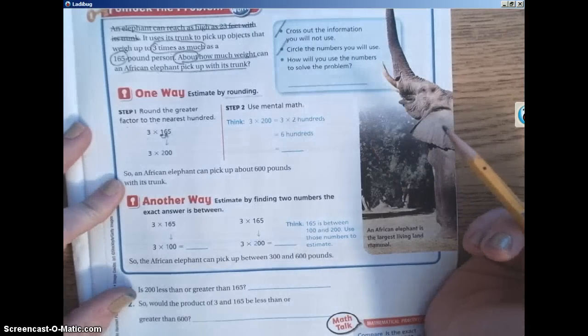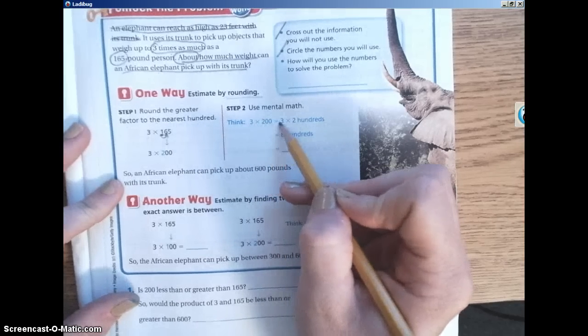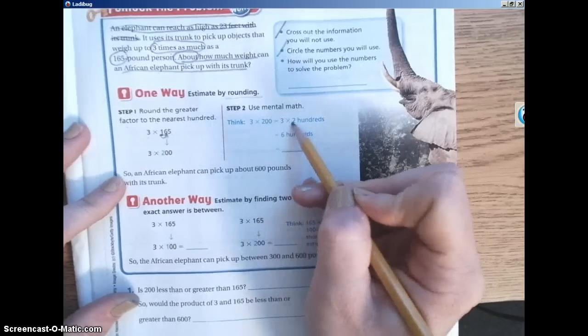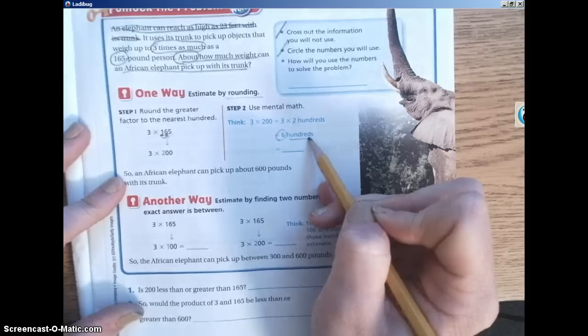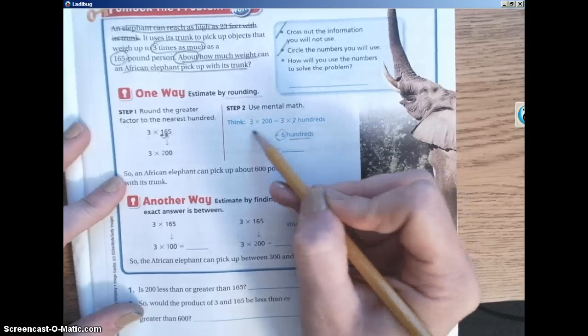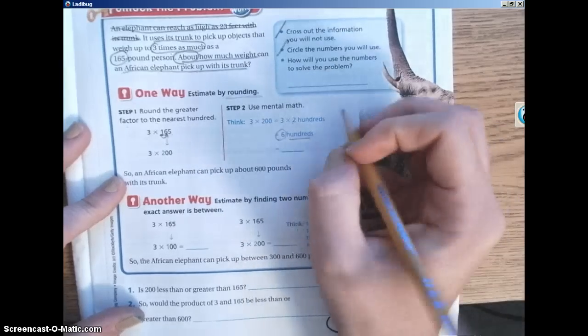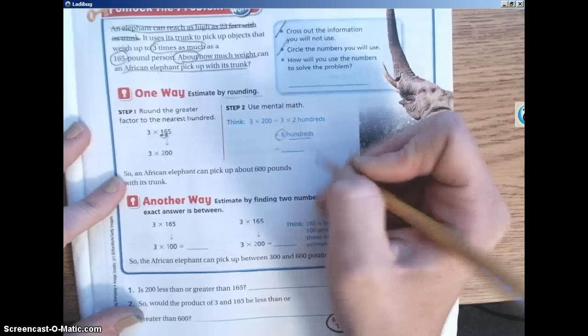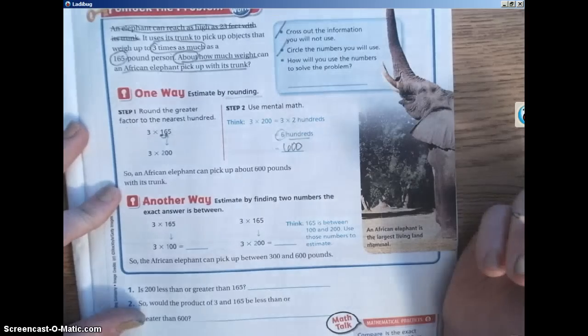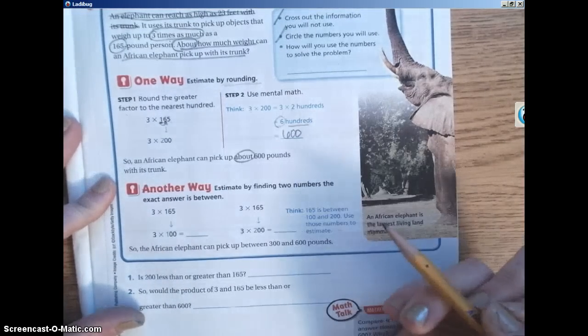Step two, you could use mental math. You could think, well, three times 200 is equal to three times 200. I know that three times two is six plus my hundreds. So that is what we did in lesson 2.3. Think back to lesson 2.3 when we did all of that multiplying by hundreds and tens. So six hundreds is equal to what number? How would you write six hundreds in standard form? You would write it 600. So an African elephant can pick up about 600 pounds with his trunk.